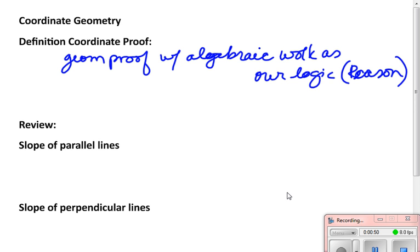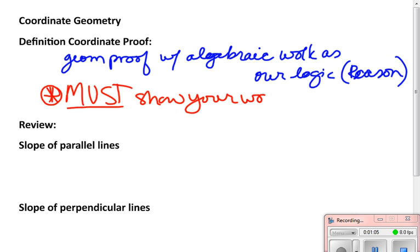So what algebraic work would we have? And the key with coordinate proofs is you must show your work and even more so you need to explain what it shows. You can't just throw a bunch of algebra on the page and hope you've gotten something correct. You need to say this proves this.